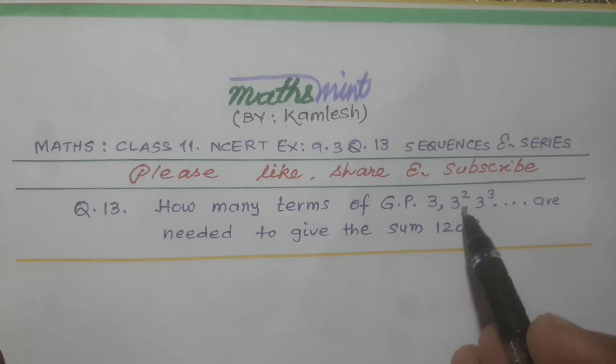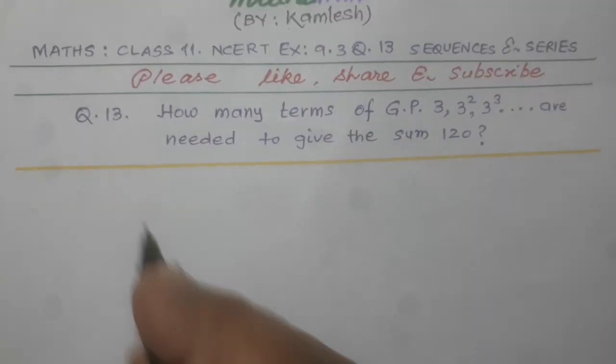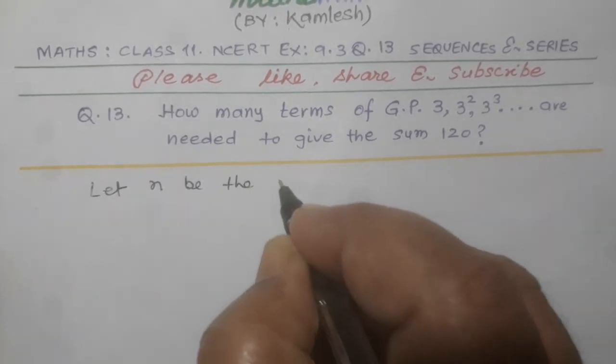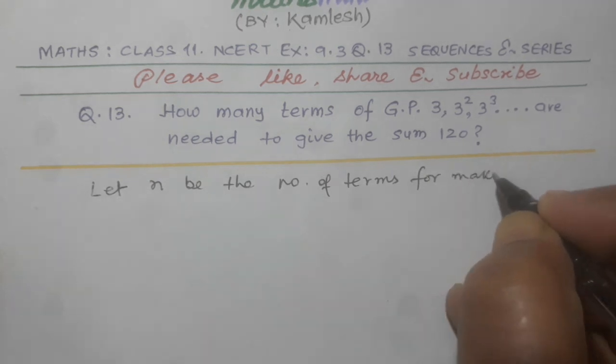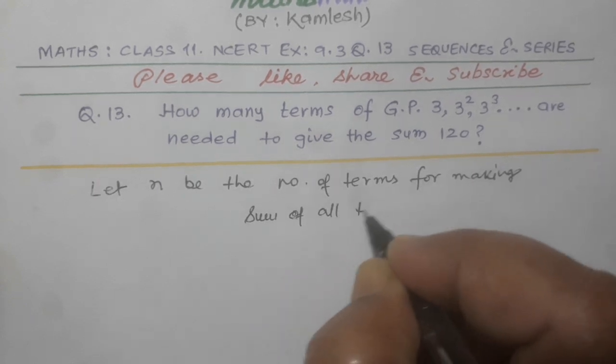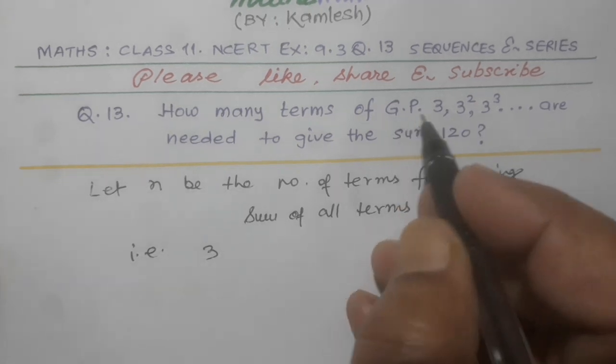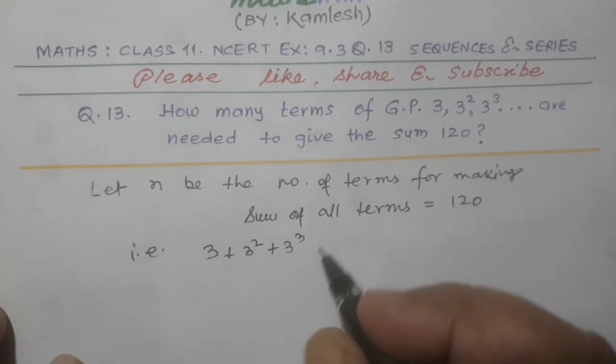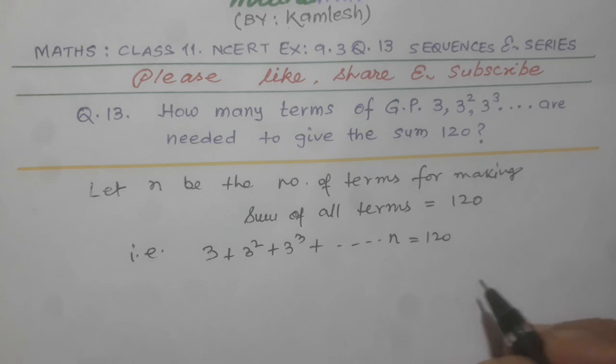We have to find the nth term such that if all the terms are added it will be 120. Let n be the number of terms for making sum of all terms equal to 120. That is 3 plus 3 square plus 3 cube plus so on up to nth term equal to 120.